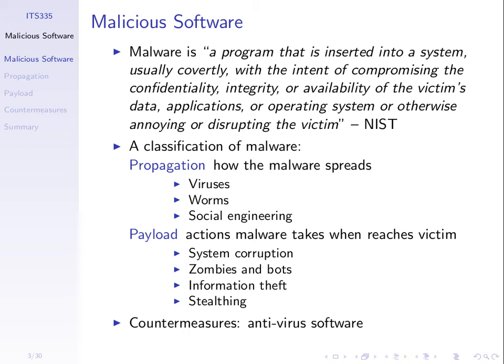Malicious software on one computer may do malicious actions, but nowadays it will also try to spread to other computers and infect those. How does it spread? Different approaches — we'll talk about viruses and worms, and social engineering, which takes advantage of the fact that people may believe things which seem true but are not. The other aspect is: what does it do? It may corrupt the system, use your computer to launch other attacks, steal information, or try to hide itself.